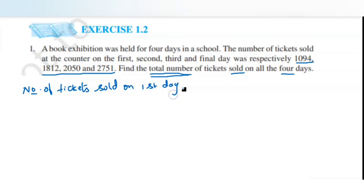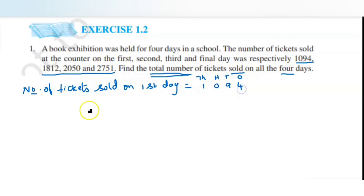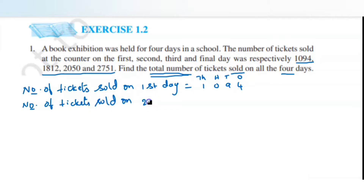It is a four-digit number, so write thousands, hundreds, tens, and ones — arrange all numbers in order so they are aligned and easy to add. Write the next statement: number of tickets sold on the second day, which is 1812 — so 1 in the thousands place, 8 in hundreds, 1 in tens, 2 in ones.